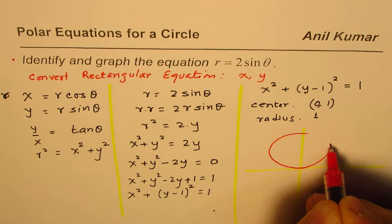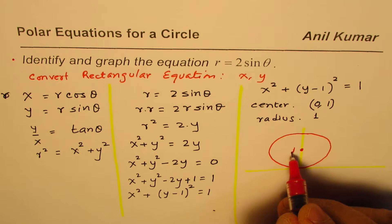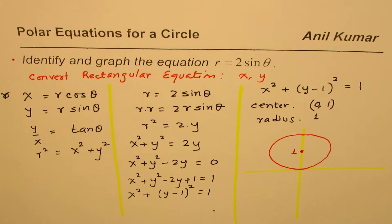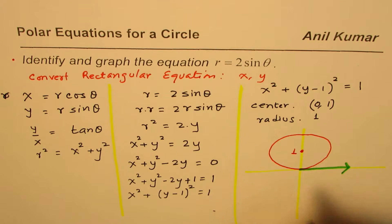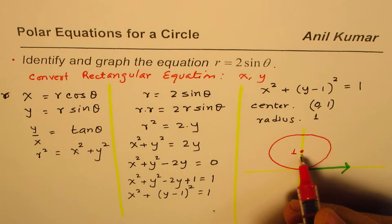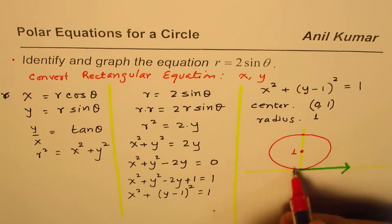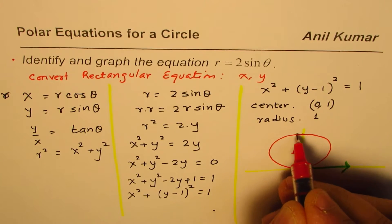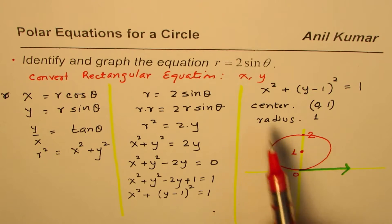So we have a circle here moved 1 unit up. The center is this place, which is 1 unit up. On a polar coordinate, you will see that this is your polar axis. The center is 1 unit up from the pole. So this point is 0, and this point here is at 2. That is how you will get a sketch for the given function r equals 2 sine theta.